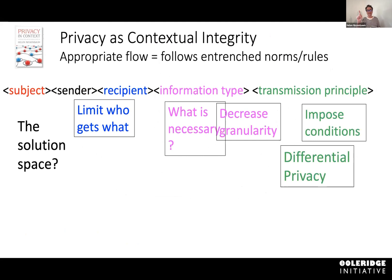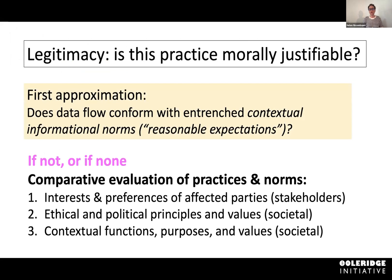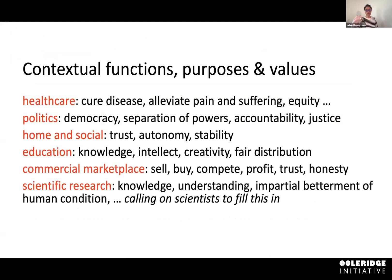When looking at data flows, keep in mind that there are multiple ways to constrain them. The problem with privacy as control is that it reduces everything to a transmission principle of control. According to contextual integrity, we need to evaluate flows in terms of how they serve contextual functions and purposes — promoting certain ends and purposes of the particular context. For scientific research, it's not for me to say — it's for the scientists to say.